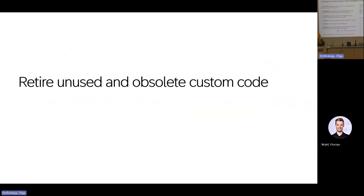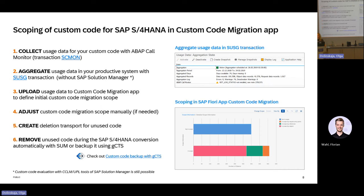The first option is to retire unused and obsolete custom code. The very important recommendation is to collect usage data. If you haven't collected usage data during system conversion, it's not too late to start after the system conversion as well. Please collect usage data directly in the ERP productive system using the ABAP Call Monitor and SUCG transaction. The ABAP Call Monitor collects the usage data; SUCG aggregates and stores it on the database without any performance overhead. This collected data can be uploaded to the Custom Code Migration app to identify unused code. The recommendation is to collect usage data for at least one year, plus year closing, to get representative results.